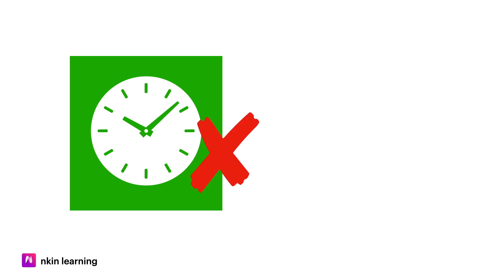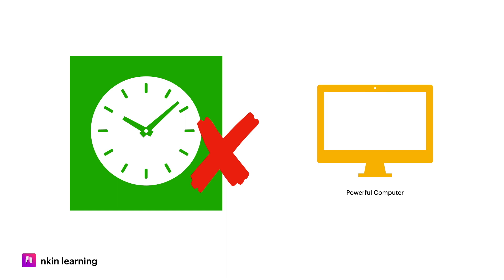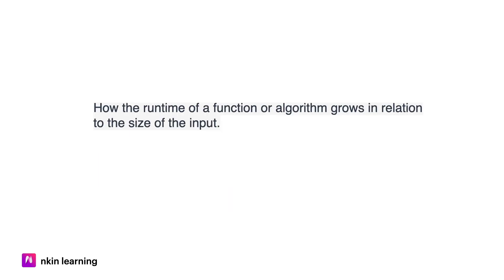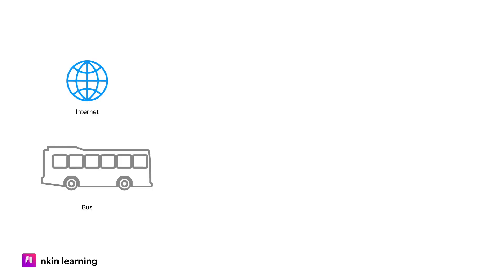Time complexity is not easy to measure in time, because if we use a very powerful computer there is a variation in time. So what we are considering is the number of operations. In the programming context, if you increase the runtime function, the runtime will change accordingly.